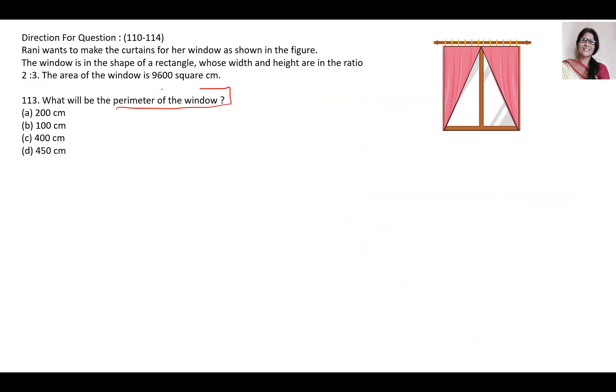Perimeter of the window. So perimeter of window we can find out - it's 2 times length plus breadth.